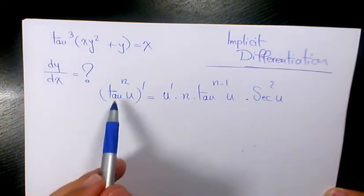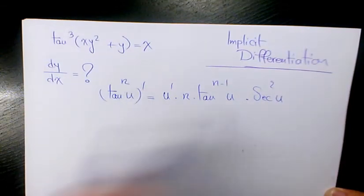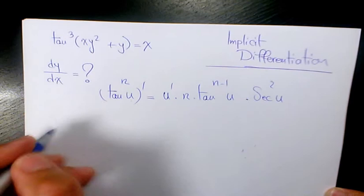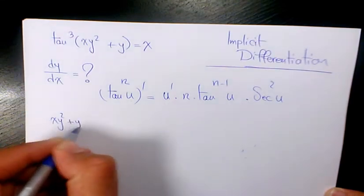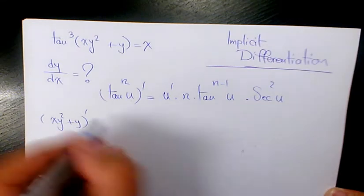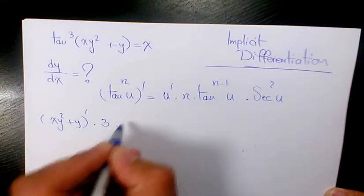That's going to be the derivative of tan to the power n of u. So we do the same thing here. It's going to be the derivative of (xy² + y) times n, which is 3 in this case,